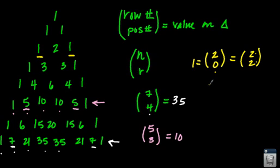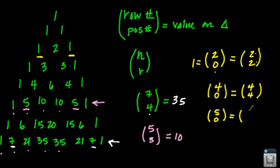If I have row 4 position zero, what's going to be equal to that, which is also going to be one? It's going to be row 4 position 4. If I have row 5 position zero, what's going to be equal to that? Hopefully by now you're saying 5 position 5.